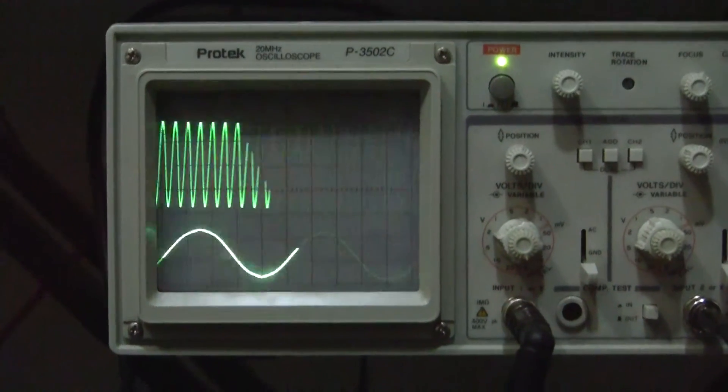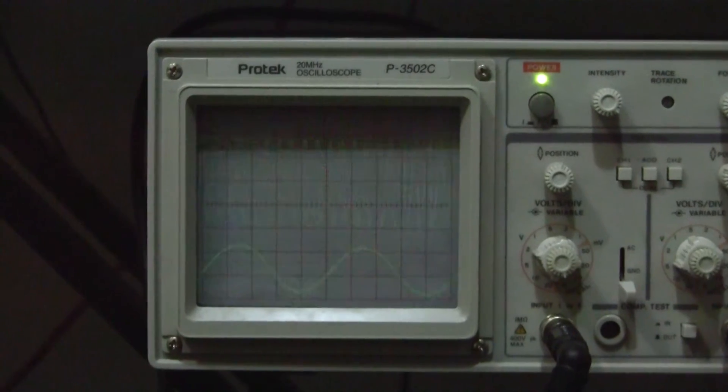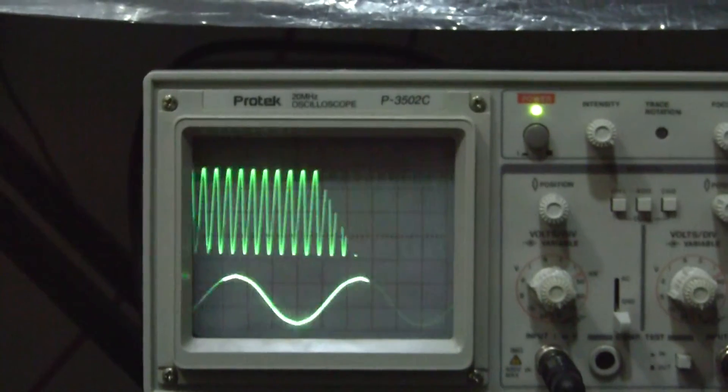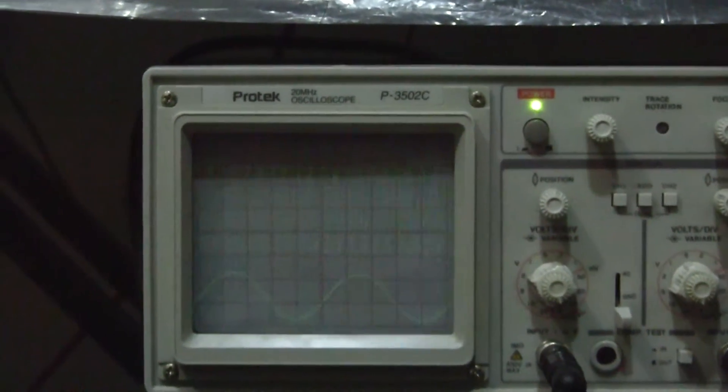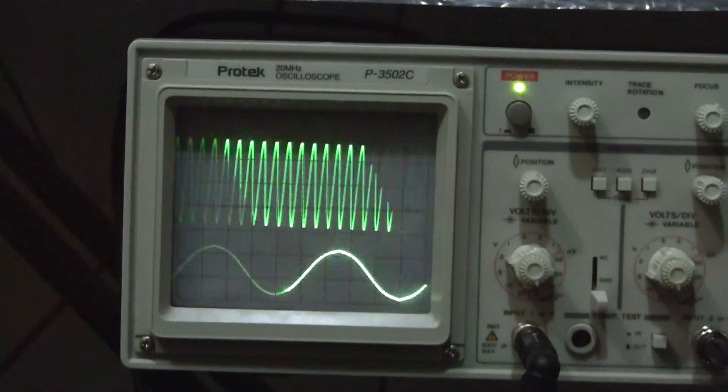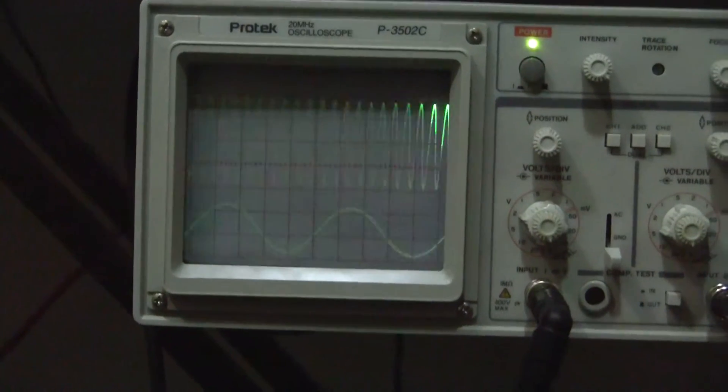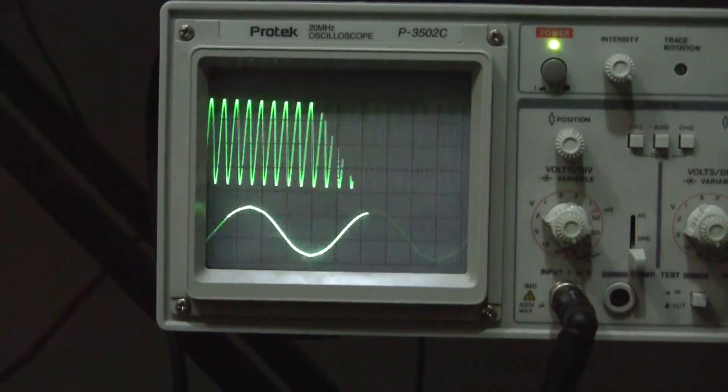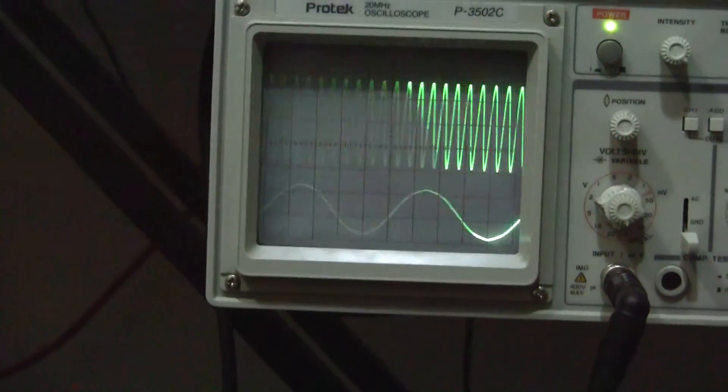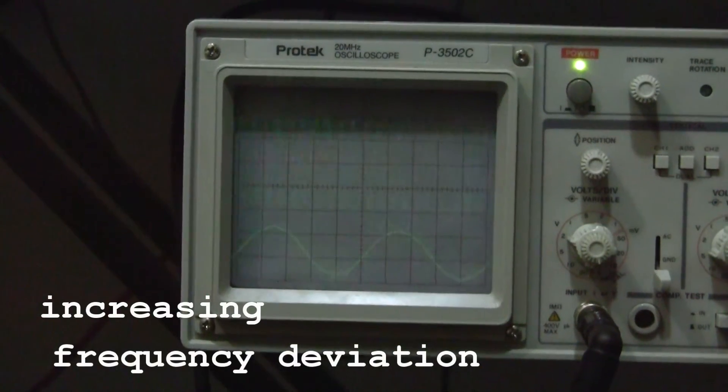What you're listening to now is the 1 kilohertz tone at the top, and at the bottom is the modulating 100 hertz tone. Now watch what happens as we increase the frequency modulation. Right now there's no modulation at all. So we're going to frequency modulate the 1 kilohertz tone at the top with the 100 hertz tone at the bottom.